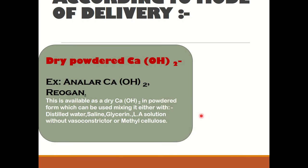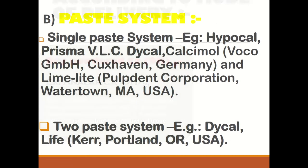According to the mode of delivery, we have dry powder calcium hydroxide and NLR calcium hydroxide. These are available as dry calcium hydroxide in powdered form, which can be mixed with distilled water, saline, glycerine, local anaesthetic solution without vasoconstrictor, or methyl cellulose. Examples of the single paste system include Hypo-Cal, Prisma VLC Dycal, Calcimol, and Limelight. Under the two paste system, we have Dycal and Life from Kerr, and Portland.